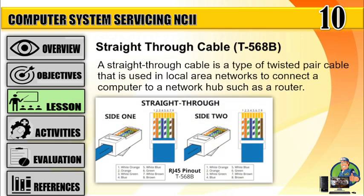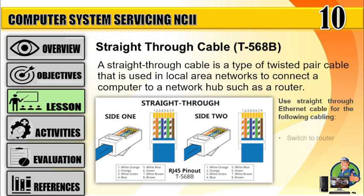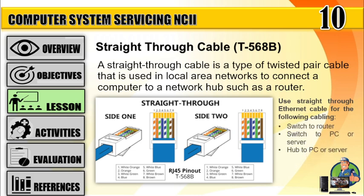Straight-through Cable or T568B: a straight-through cable is a type of twisted pair cable used in local area networks to connect a computer to a network hub such as a router. Use straight-through ethernet cable for the following connections: switch to router, switch to PC or server, and hub to PC or server.